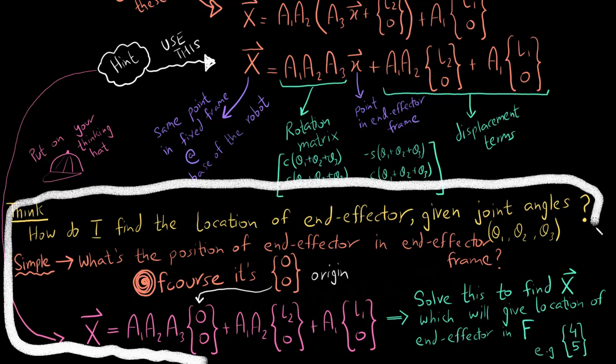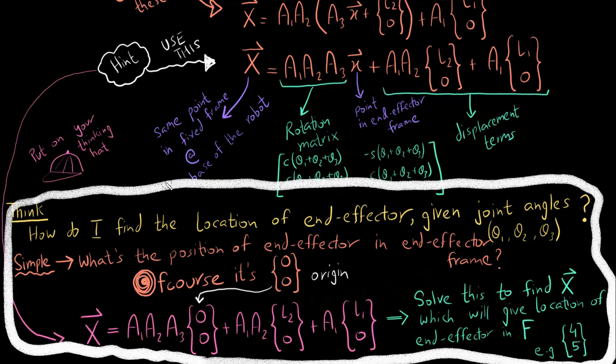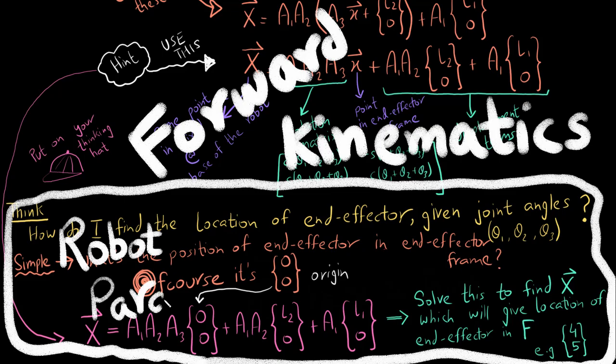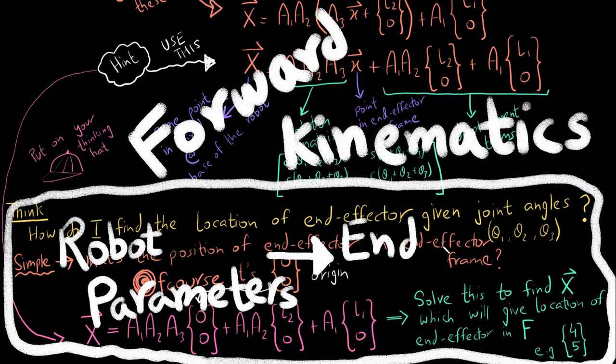So this is what we call forward kinematics. Forward kinematics is basically given the robot parameters, I have to start from the robot parameters and find out the position and orientation of the end effector.